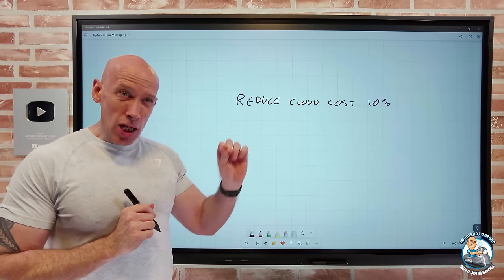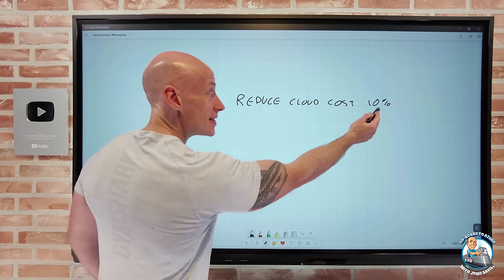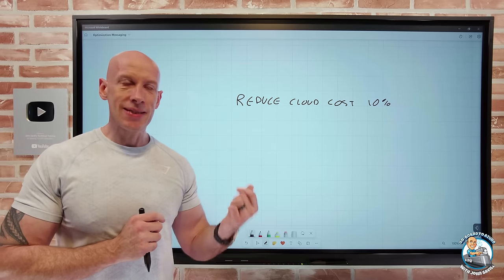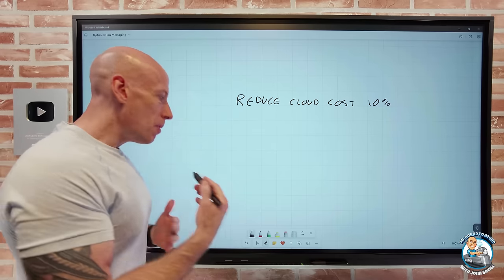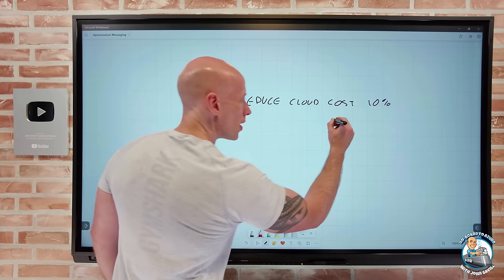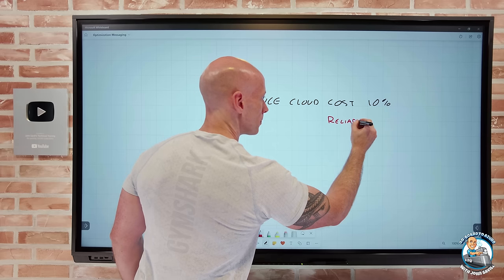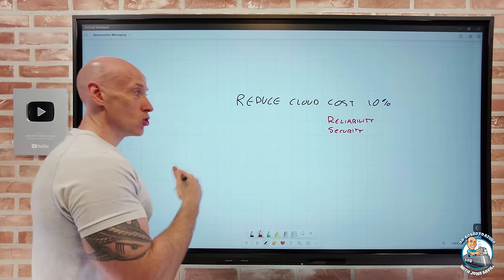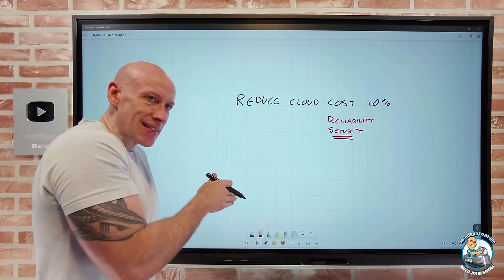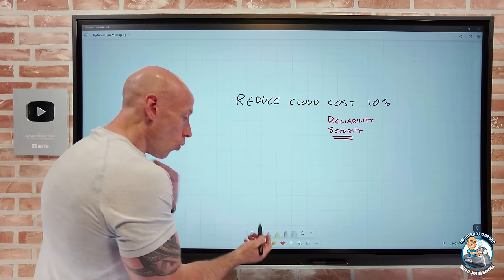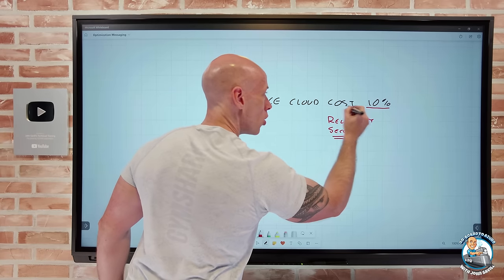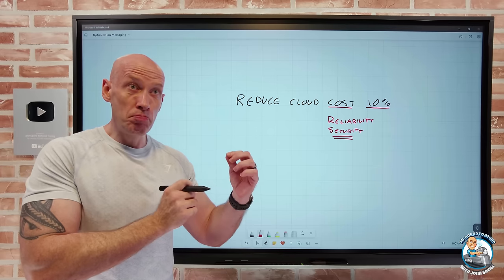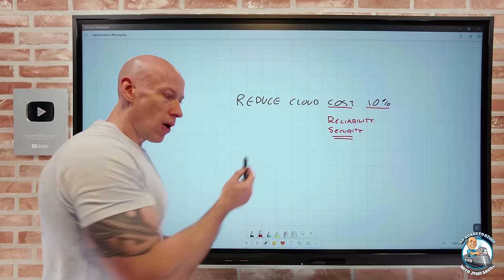And that success metric you've defined, remember your success metric is 10%. You may well be successful. You'll reduce cost 10%. But the challenge is what's happened behind the scenes is you've probably now compromised your reliability. You may have compromised your security. You may have impacted your operational excellence, your performance efficiency. There's a bunch of other things now that most likely, yes, your one success metric you defined cost and 10%. Hey, great, we hit that. But what you're not seeing immediately but you're going to see it is you've compromised these other areas.